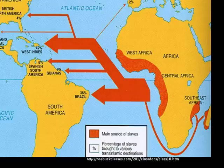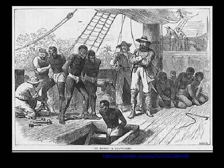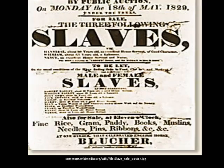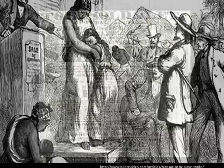Slavery in America began when the first African slaves were brought to the Virginia colony in 1619. African slaves were brought to America to help build and work lucrative crops such as tobacco, rice, and indigo, primarily in the southern American colonies. African slaves were considered a much cheaper and more bountiful labor source than the indentured servants.